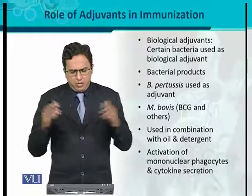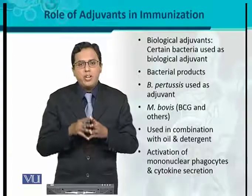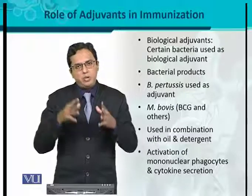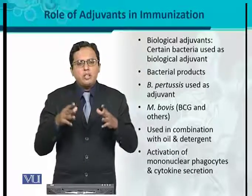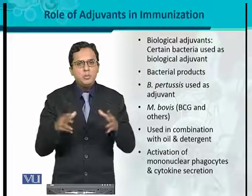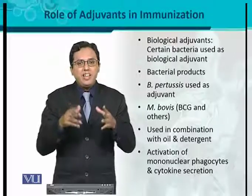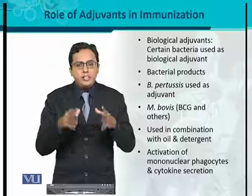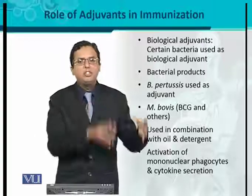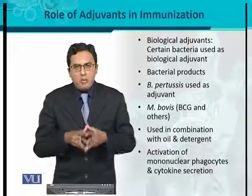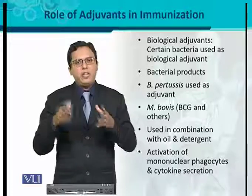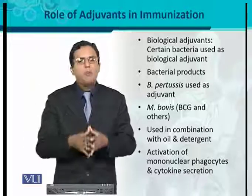The activation of mononuclear phagocytes and cytokine secretion are the very important hallmarks of biological adjuvants. Biological adjuvants activate mononuclear phagocytes and cause cytokine secretion. When cytokine secretion occurs, all kinds of immune cells are activated and an appropriate immune response is generated against the particular vaccine used in combination with the biological adjuvant. Thus, adjuvants have a very important role in vaccination, whether they are chemical or biological in nature.